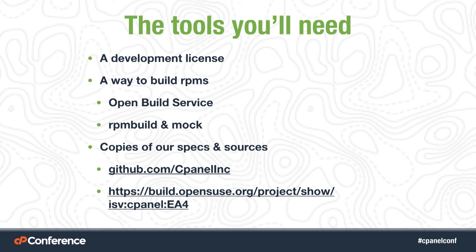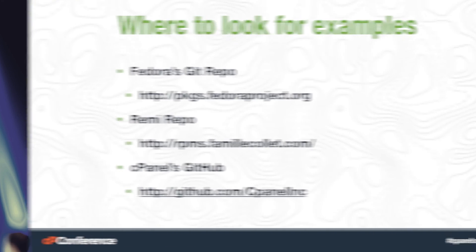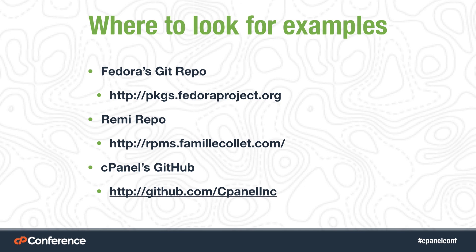The next thing you're going to need is a copy of our specs and sources. You can get those on our GitHub account, as shown on this slide, or on build.opensuse.org, where we have our own independent software namespace just for packages that cPanel provides. Now, just telling you we have some packages out there may not be enough. If you want to know how to distribute something like Memcached, you might want to look at packages.fedoraproject.org — this is Fedora's Git repo. It contains RPM spec files for every package in Fedora and quite a few in Enterprise Linux as well.